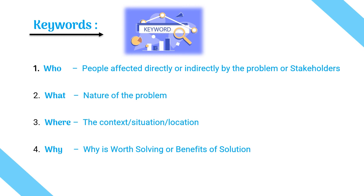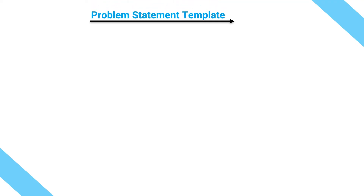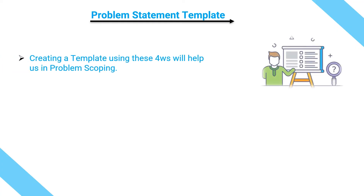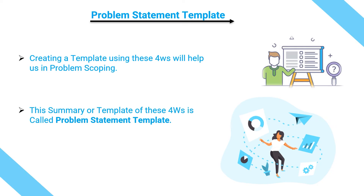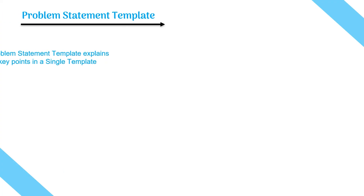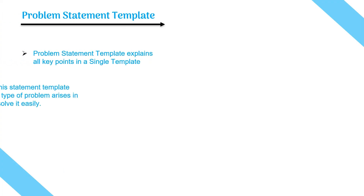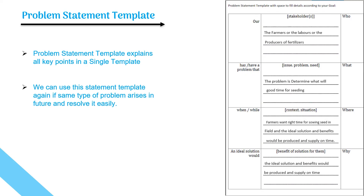Now we know about the four W's and can use them in problem scoping. For this we can create a template using these four W's, called the problem statement template. This template explains all the key points in a single place, and you can reuse this template if the same type of problem arises in the future and resolve it easily. This is how the problem statement template looks.